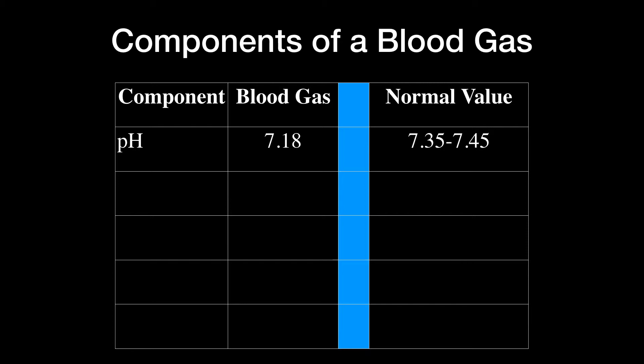The next value reported in a blood gas is almost always the CO2. In this case it was 30. A normal value of a CO2 is between 35 and 45 millimeters of mercury.